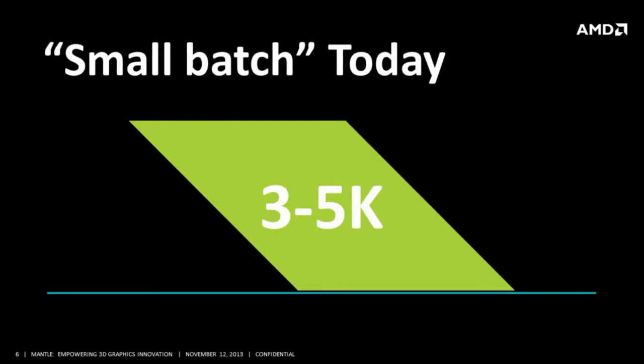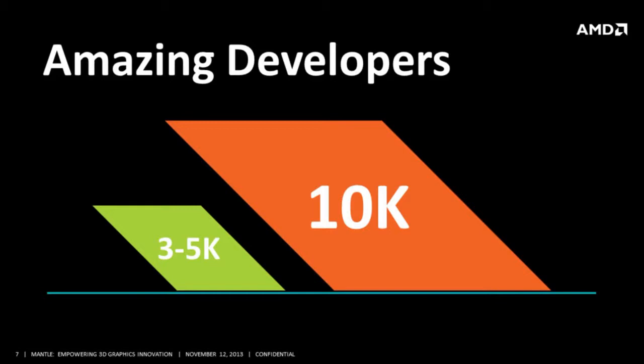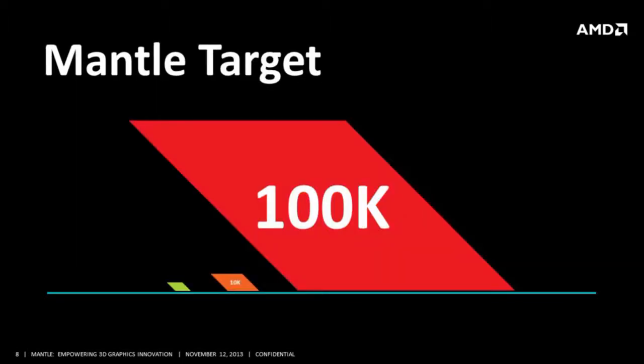This is what you would hear every year from AMD and other hardware vendors at GDC optimization talks — three to five thousand draw calls. An amazing developer on a lucky day can do maybe two to three times that. But our goals are far more aggressive. Our target for Mantle is to give you at least a magnitude better small batch performance — not two or three times, but a magnitude better: a hundred thousand draw calls per frame or more if you optimize further.